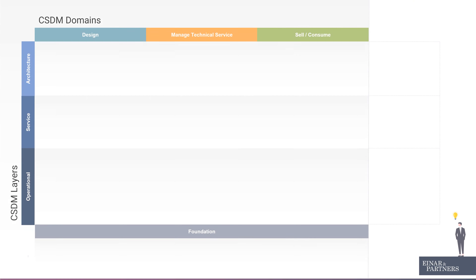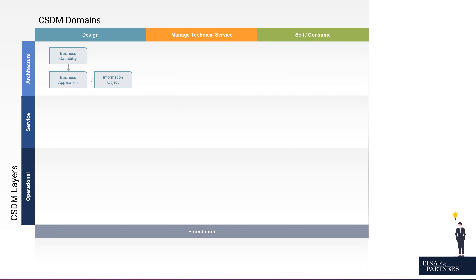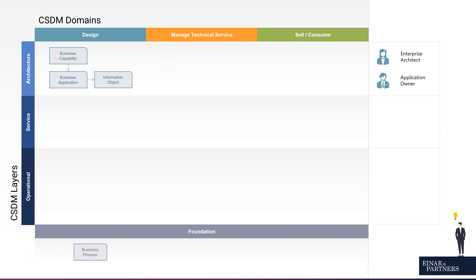The first CSDM layer is the architectural layer. It's pretty much the same as the CSDM design domain; however, it also encompasses foundational records such as the business process itself, because this is interesting for our business stakeholders as well as enterprise architects to define requirements for our business applications.